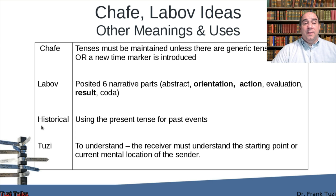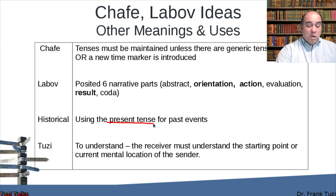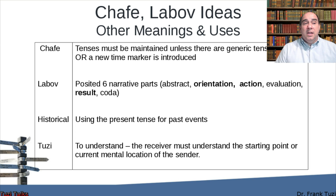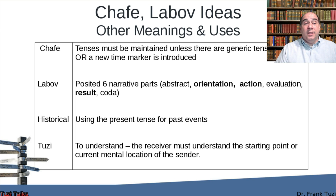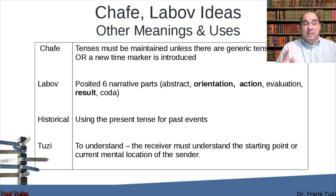There are other components that should be understood for meaning to be clear. One is the historical present — using the present tense for past events. When talking about Lincoln, for example, you might say: "Lincoln makes his declaration and then he goes to Virginia." These are things that happened in the past, but you refer to them in the present tense because in your mind you're at that event.